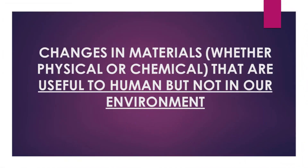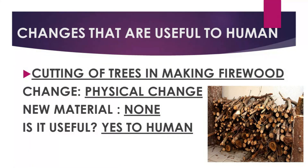Now let's move on. There are also changes in materials, whether physical or chemical, that are useful to humans but not to our environment. Number one is cutting of trees in making firewood. What change is it? Physical change. Is there a new material formed? None. Is it useful? Yes, to humans — we can use it as fuel for cooking. But it is harmful to our environment because cutting of trees causes flooding.